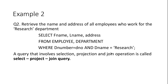A query that involves selection, projection, and join operations is called a Select-Project-Join (SPJ) query. Here, by giving a condition we are selecting rows (selection), we are retrieving only some attributes (projection), and we are joining two tables (join operation). So this is an example of a Select-Project-Join query.